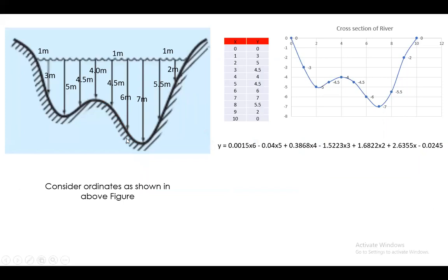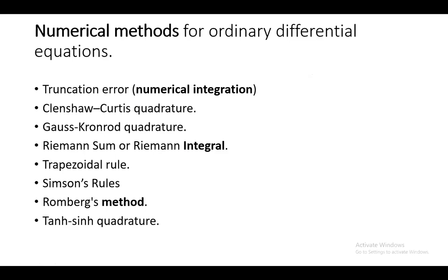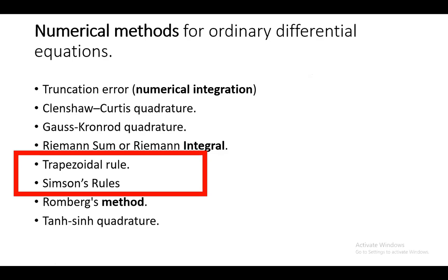I explained by taking the ordinate how we can obtain the equation for the area, and how using normal integration methods with definite integrals we can calculate the area of cross-sections in civil engineering applications. Since the equation can be complex, it becomes difficult to calculate the area, so we go for numerical methods.